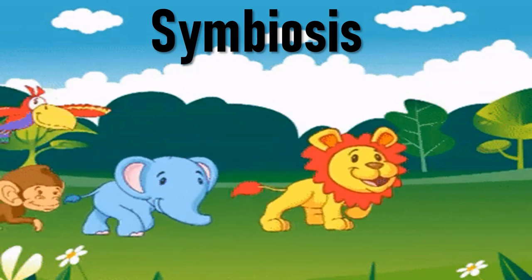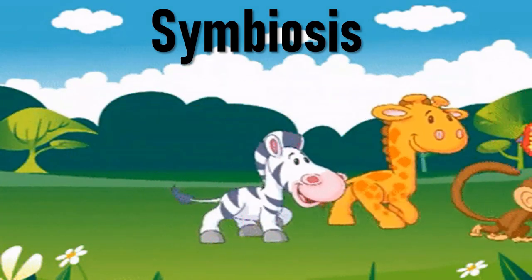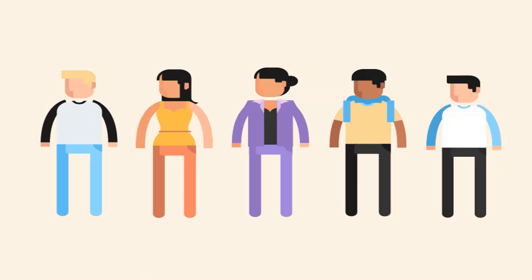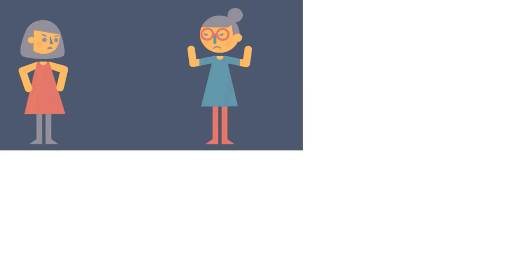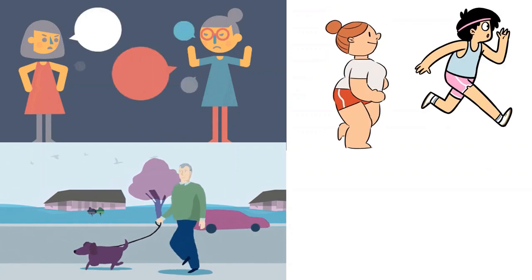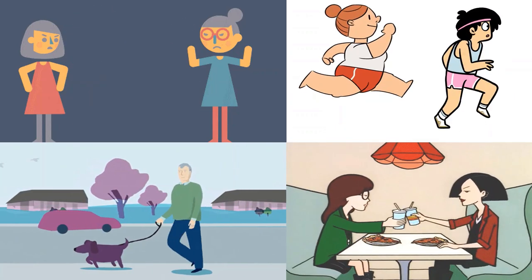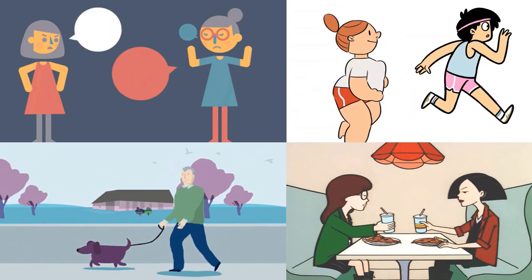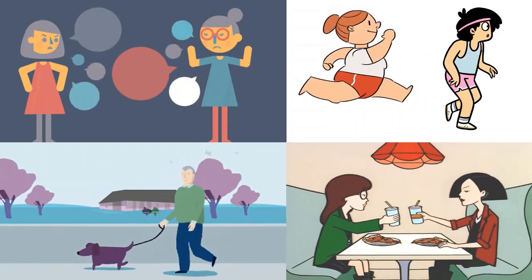When two or more species live closely together, they establish a relationship called symbiosis. In our life, we have many interactions with people around us. You really wish to kill some people while you are unaffected by some. There are some with whom you compete, whereas some whom you love. Similarly, when two different species come in contact with each other, there are many possible types of interactions that can occur.